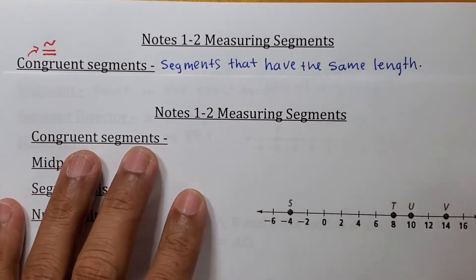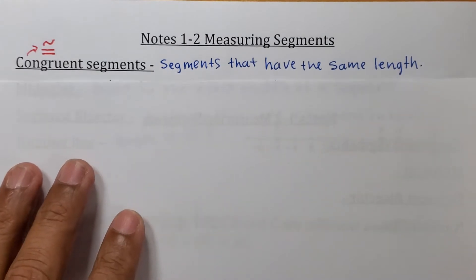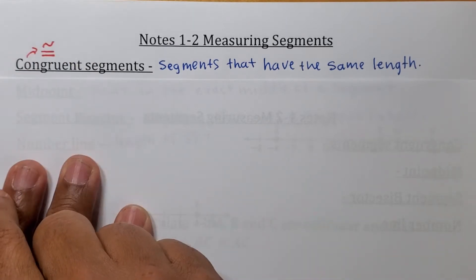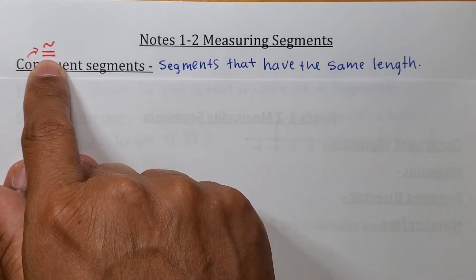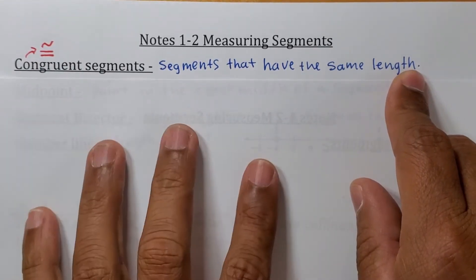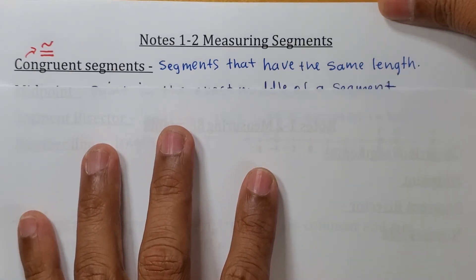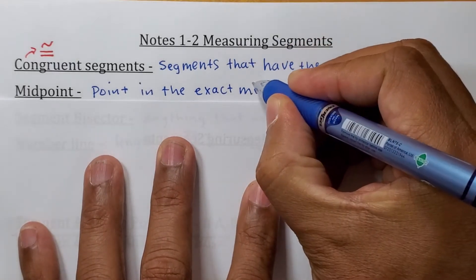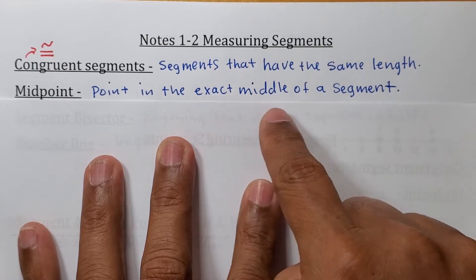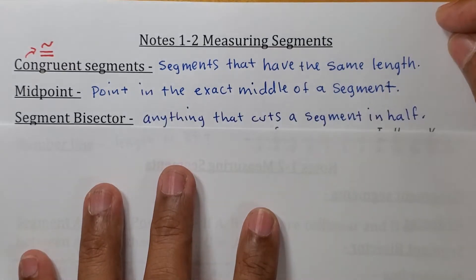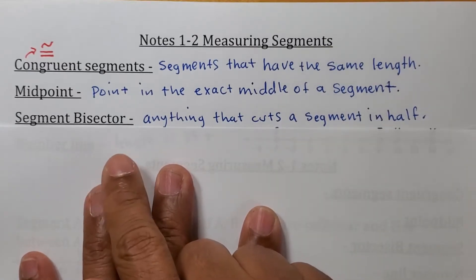Watch this symbol here — the equal sign with a squiggle above it means congruent. So if you see that symbol, just know that it means congruent. Congruent segments are segments that have the same length. The next definition is the midpoint: a midpoint is a point in the exact middle of a segment, right at the center.